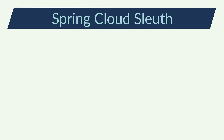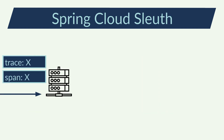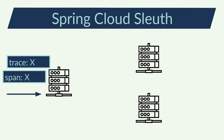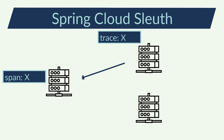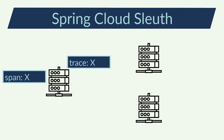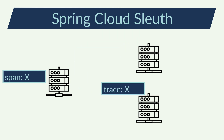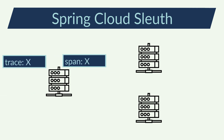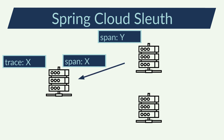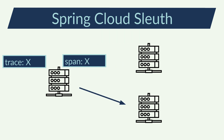Spring Cloud Sleuth marks every line of log with two pieces of information: a trace ID and a span ID. The trace ID is a unique identifier for a request made from the end user. Each request made within my microservice architecture will be marked with this trace ID. On the other side, the span ID is a unique identifier within each microservice. I will have a different span ID at each microservice for a given end user request.